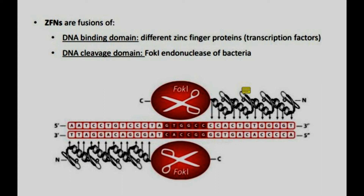The DNA binding domain consists of different zinc finger proteins — these are transcription factors. The DNA cleavage domain is an endonuclease from bacteria called the FokI endonuclease. This is the region where the forward and the reverse ZFN cleavage domains bind together and dimerize to help cleave at that point. Each domain of a zinc finger is able to recognize three base pairs of the DNA sequence.